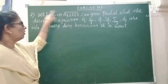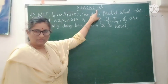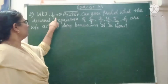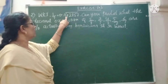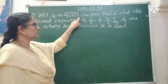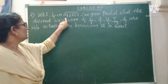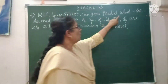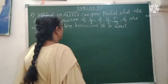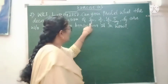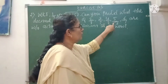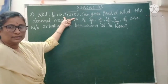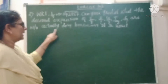The second question of exercise 1.3 is: given that 1/7 is equal to 0.142857 repeating, can you predict the decimal expansion of 2/7, 3/7, 4/7, and 5/7? That is, can you find the quotient without actually doing long division?